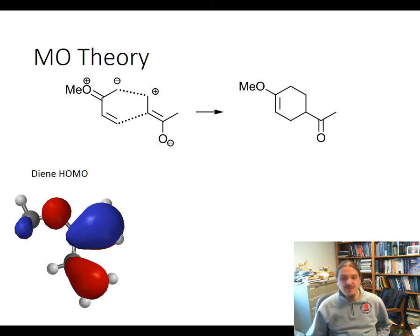But the one thing I want to draw your attention to here is that one lobe of the orbital on the diene is bigger than the other. And it happens to be that same position where we would draw the negative charge and the resonance contributor.